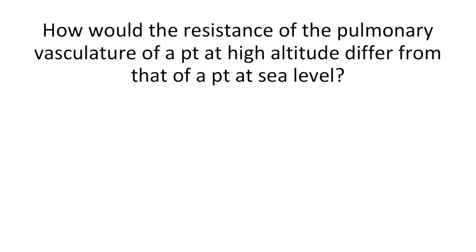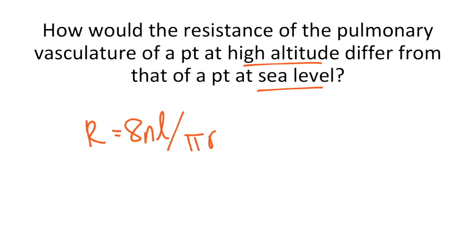Let's wrap up this section with one more question. How would the resistance of the pulmonary vasculature of a patient at high altitude differ from that of a patient at sea level? We'll get into the resistance equation in more detail later in this chapter, but recall from cardiology that resistance equals 8 times viscosity times the length divided by pi times the radius to the 4th power. We can see from this equation that the radius of the vessel is the most important factor that alters resistance — if the radius decreases, resistance increases. For Step 1, it's important to know that less oxygen reaches the alveoli at high altitudes, which means less oxygen is in the blood, so patients are hypoxic.